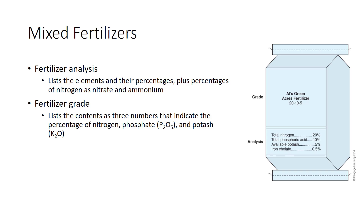Grade lists the content as a sequence of three numbers that tell in order the percentage of nitrogen, phosphoric acid, and potash. Grade is often referred to as NPK, which stands for nitrogen, phosphorus, and potassium, in that order.